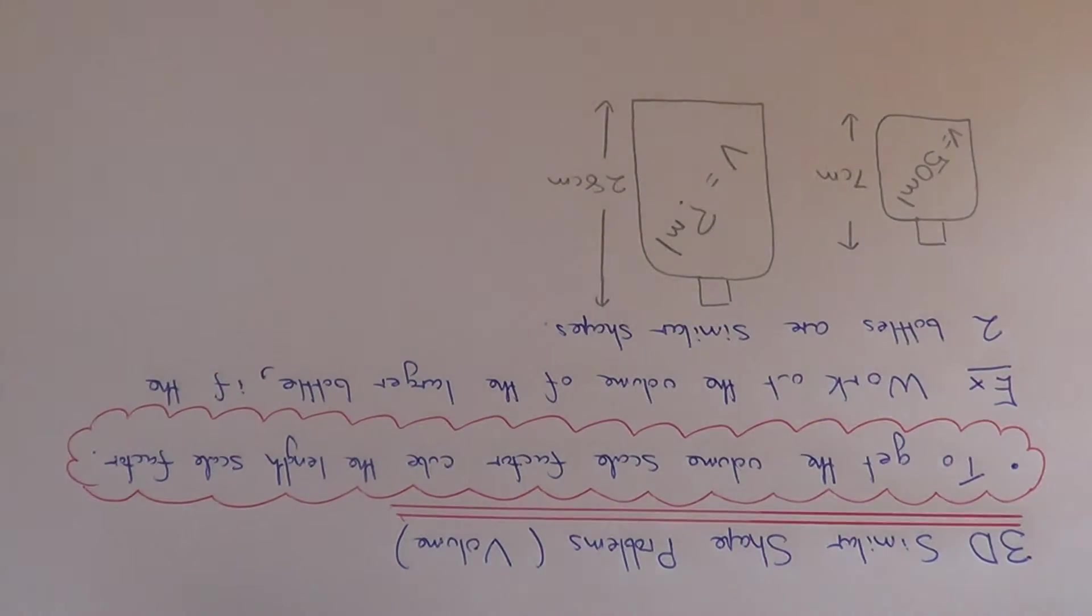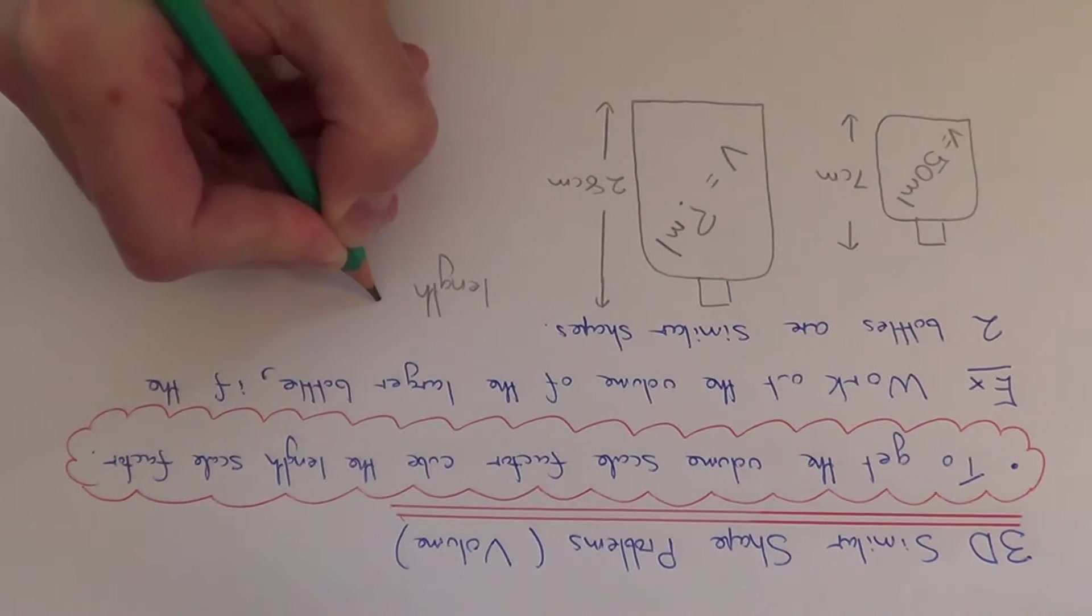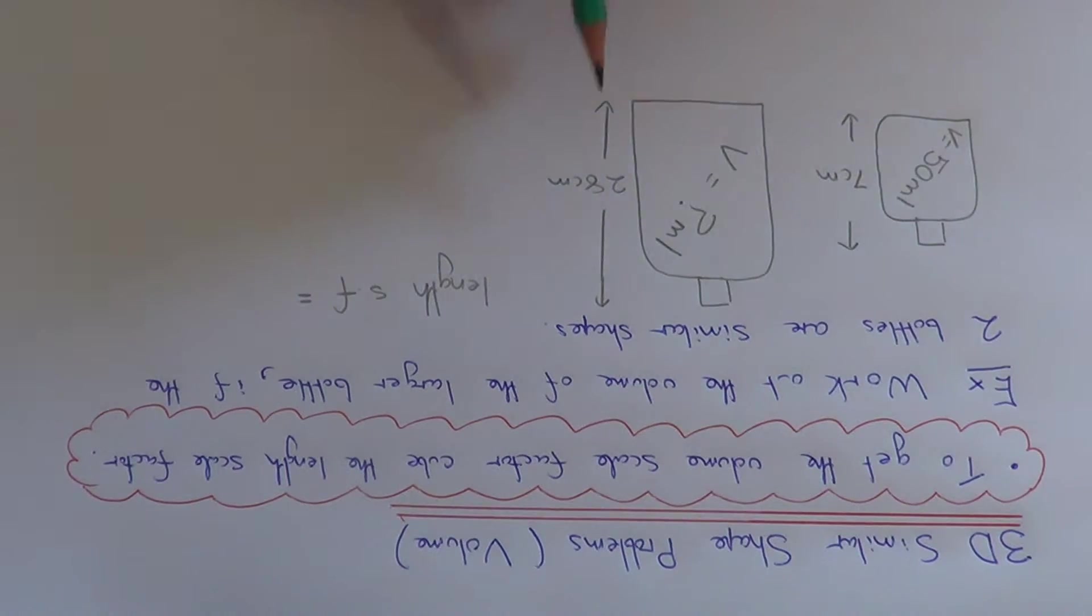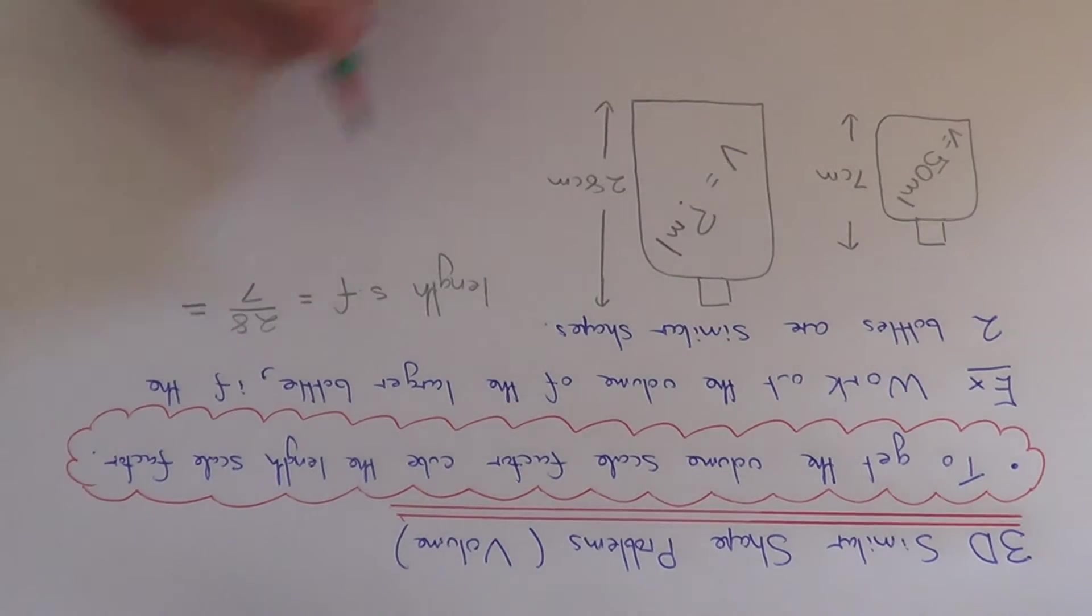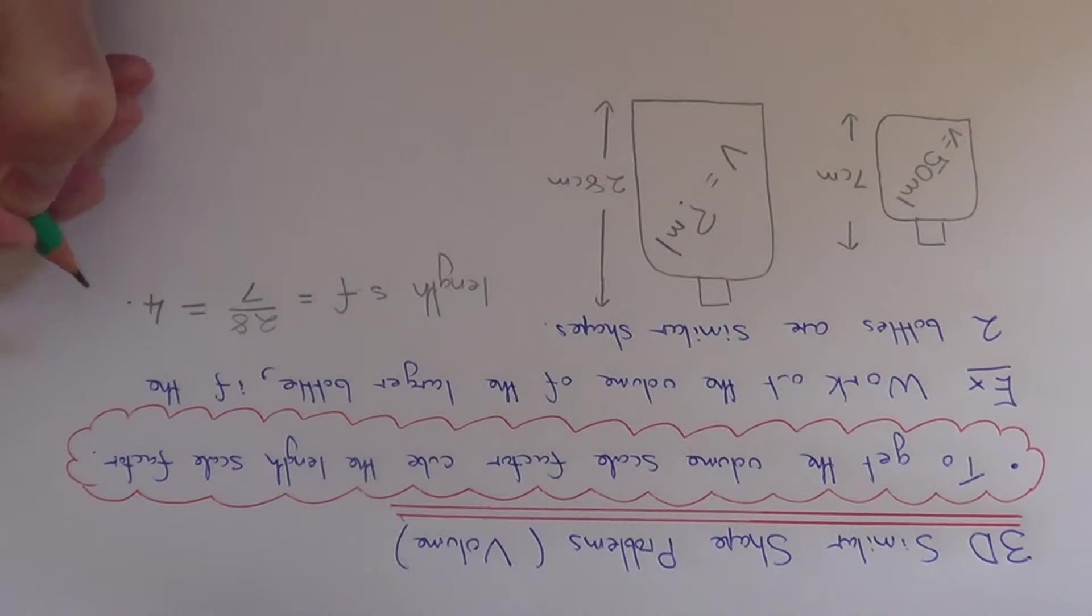So the first thing we need to do is work out the length scale factor. To get the length scale factor we divide the heights of the two bottles. So we do 28 divided by 7. So this gives us an answer of 4.